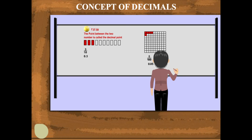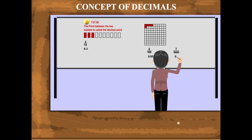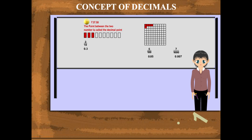In the same way, 7 parts out of 1000 is 7 upon 1000, and the decimal becomes 0.007. That was easy, ma'am.